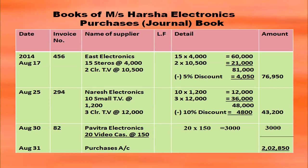81,000 minus trade discount 4,050 = 76,950. On August 25th, Naresh Electronics: 10 small TVs at rupees 1,200; 10 × 1,200 = 12,000. 3 color TVs at rupees 12,000; 3 × 12,000 = 36,000. So 12,000 plus 36,000 = 48,000. Less trade discount 10%: 48,000 × 10/100 = 4,800. So 48,000 minus 4,800 = 43,200.